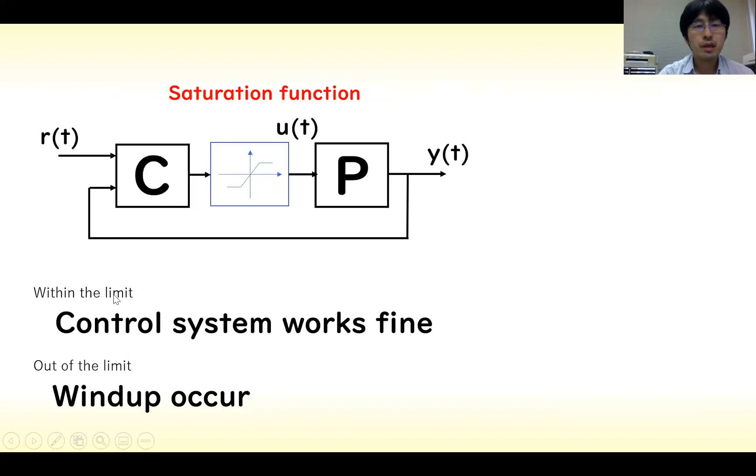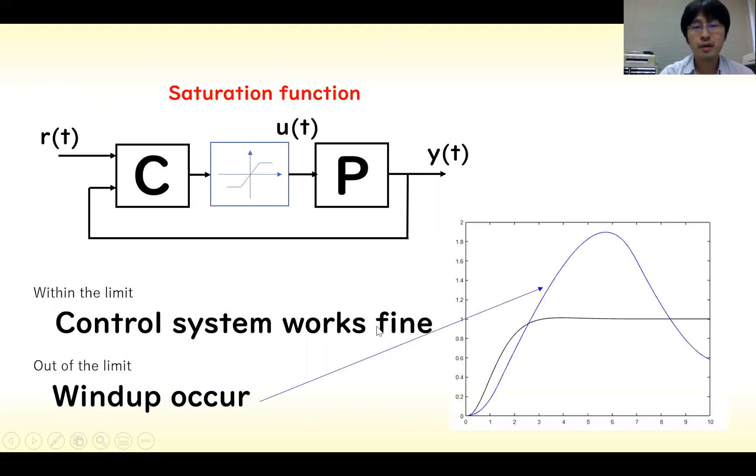When the input is within the limit, the control system works fine. On the other hand, when out of the limit, the windup effect occurs like this blue line.